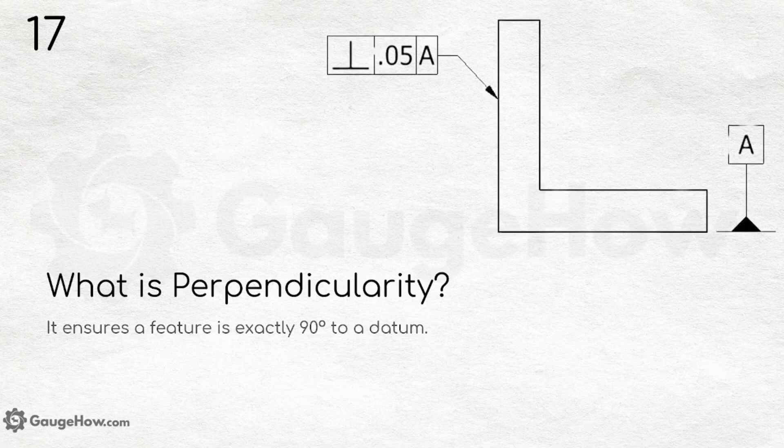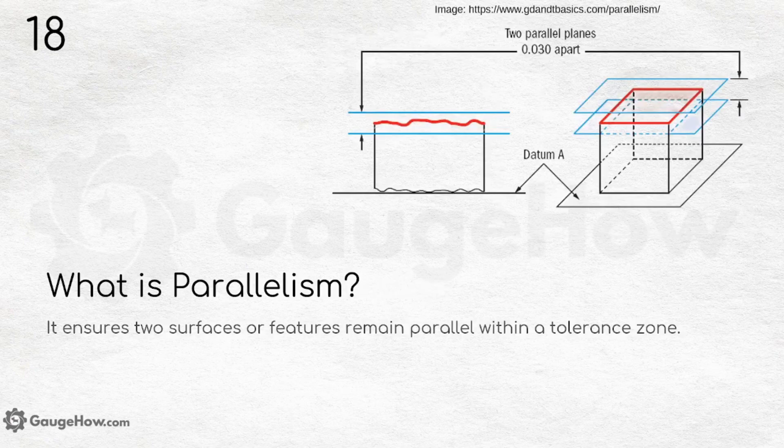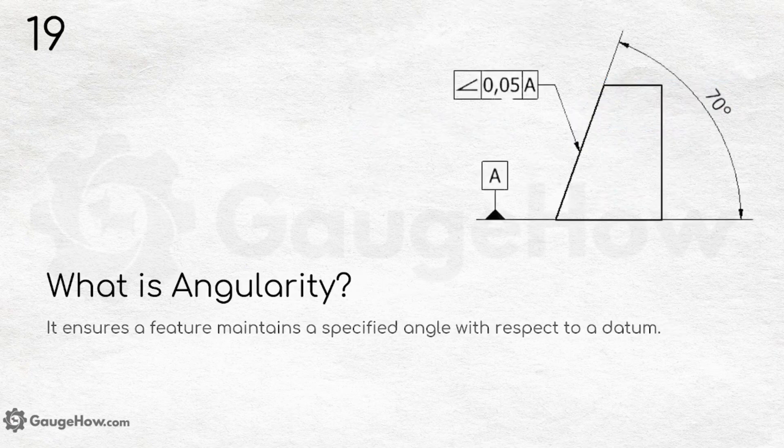What is parallelism? It ensures two surfaces or features remain parallel within a tolerance zone. What is angularity? It ensures a feature maintains a specified angle with respect to a datum.